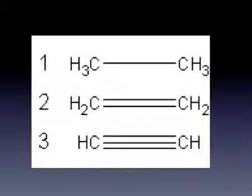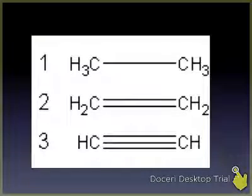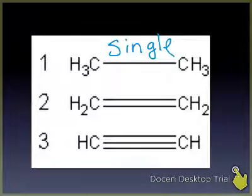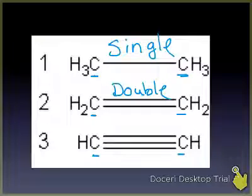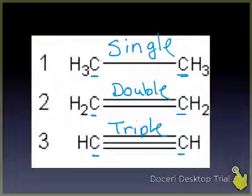There are different ways to denote single, double, and triple bonds. One line between two carbons represents a single bond — sharing one pair of electrons. Two lines represent a double bond — sharing two pairs. Three lines represent a triple bond — sharing three pairs. And if you notice, as the number of bonds between carbons increases, the number of hydrogens decreases, because there are fewer electrons available for bonding with hydrogen.